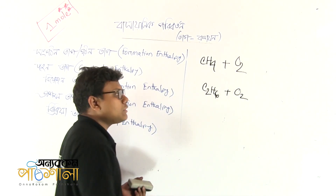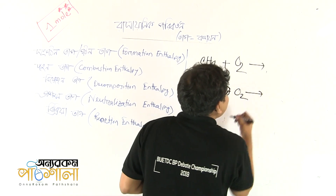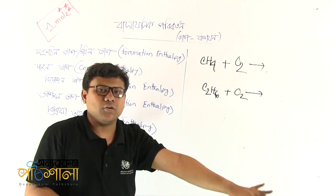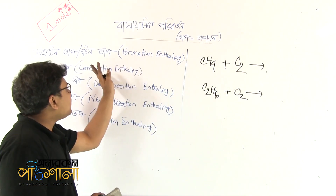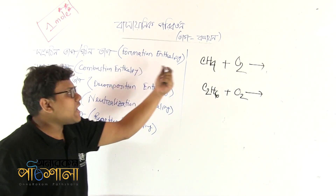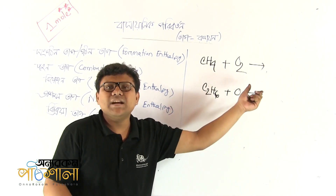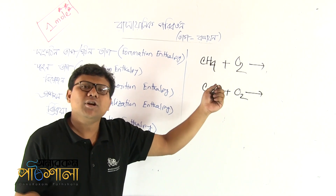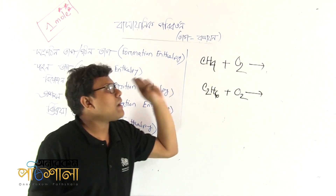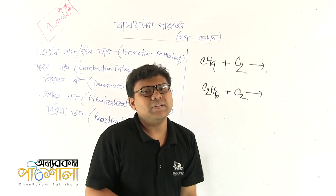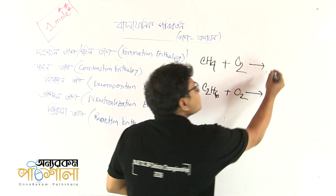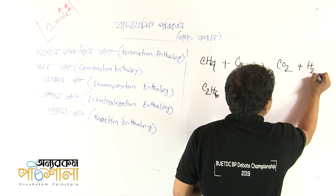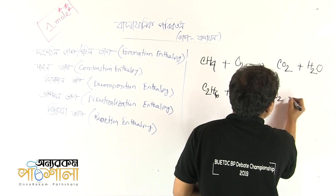We have C2H6. When hydrocarbons react with oxygen, the products on the right-hand side are carbon dioxide and water.